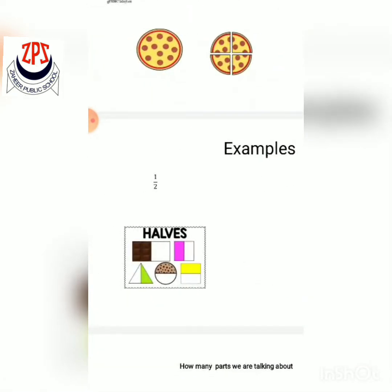Now here are examples of one half. First: a rectangle divided into two equal parts, one is colored brown — you write this as one upon two. Second: a square where one part is colored pink and the total parts are two — you write one upon two. Third: a triangle with two equal parts, one is green — you write one upon two.